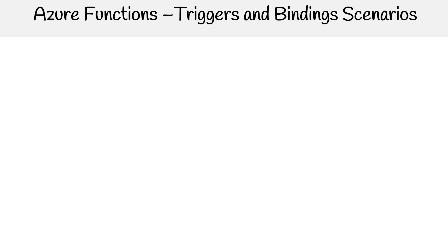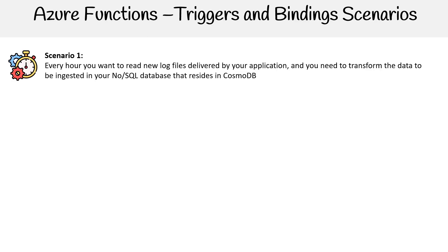I want to go through a few scenarios of triggers and bindings to help cement the idea of their utility. In our first scenario, every hour you want to read a new log file delivered by your application, and you'll need to transform the data to be ingested in your NoSQL or SQL database that resides in Cosmos DB.